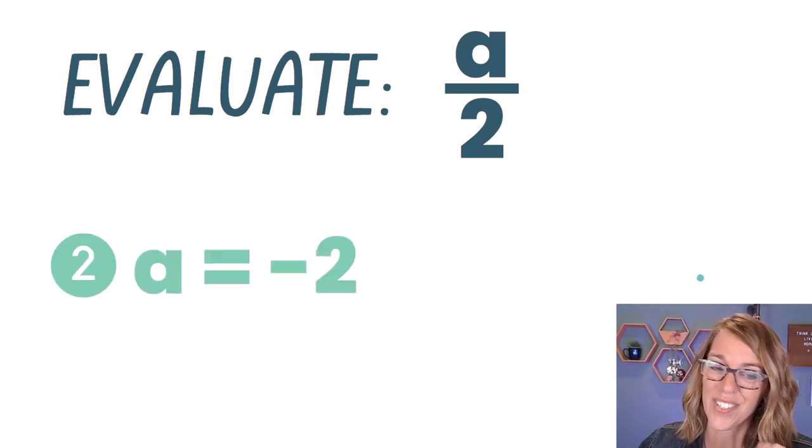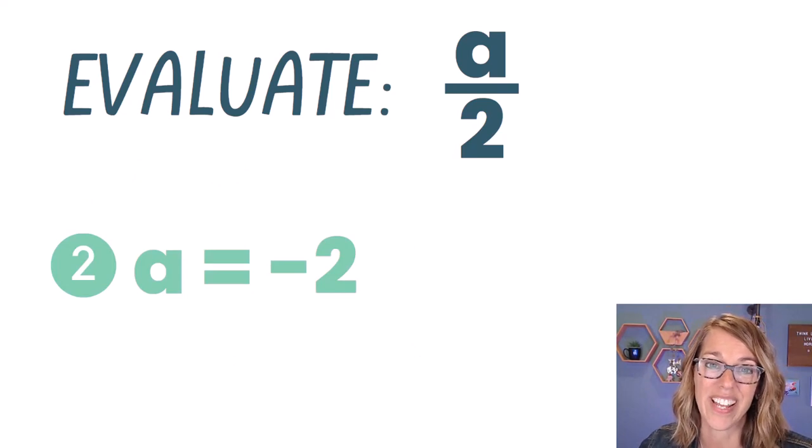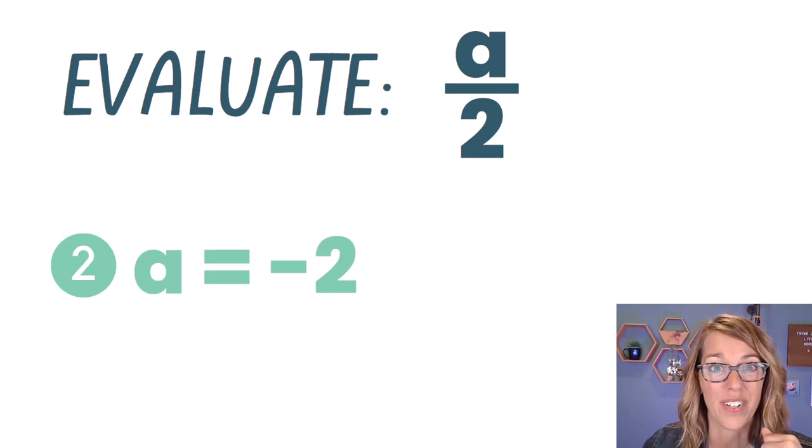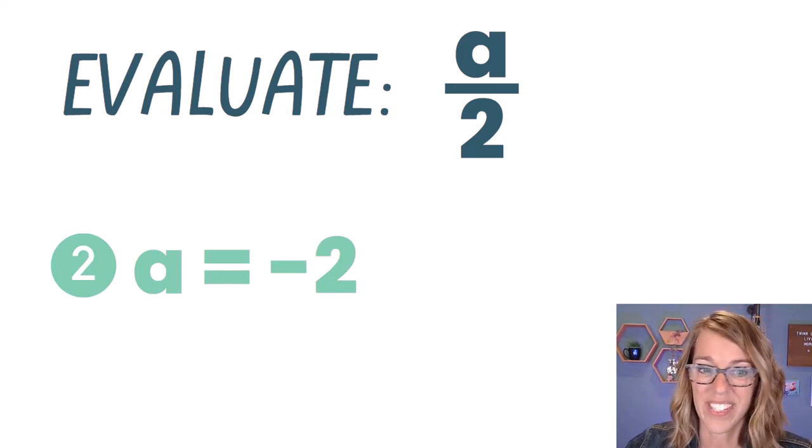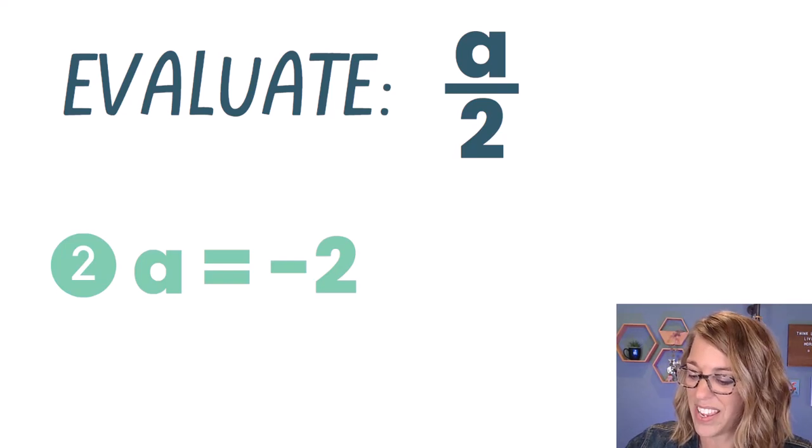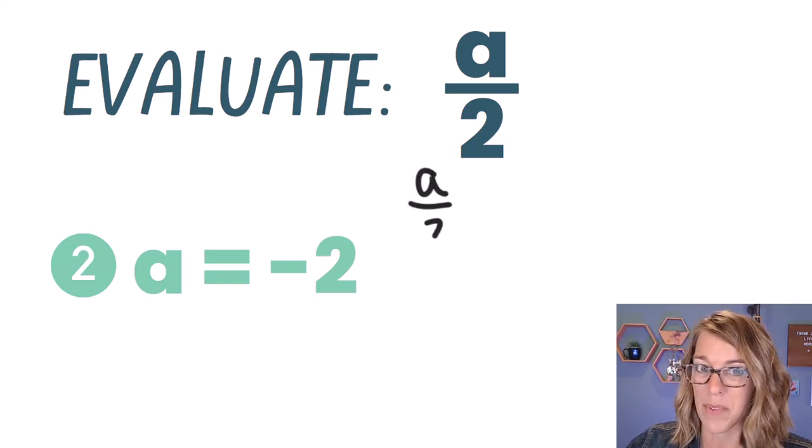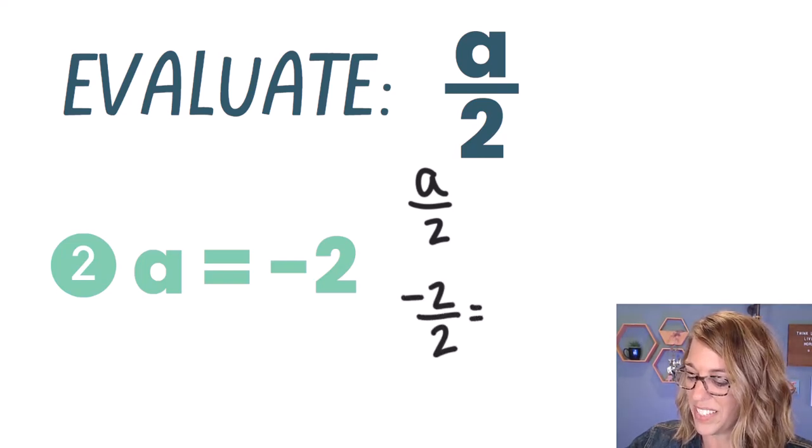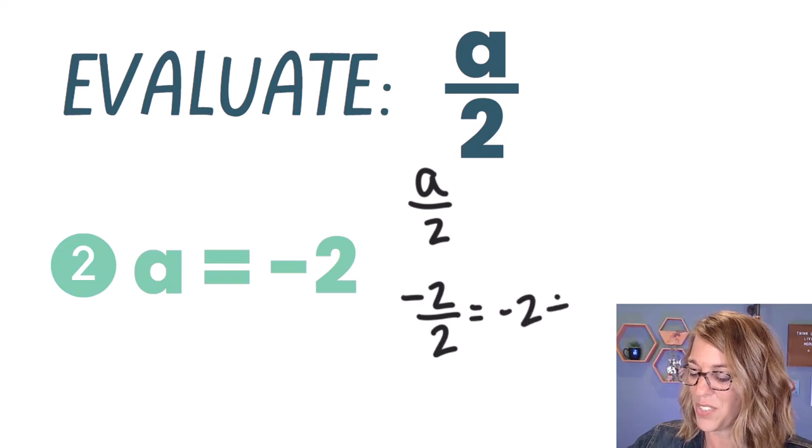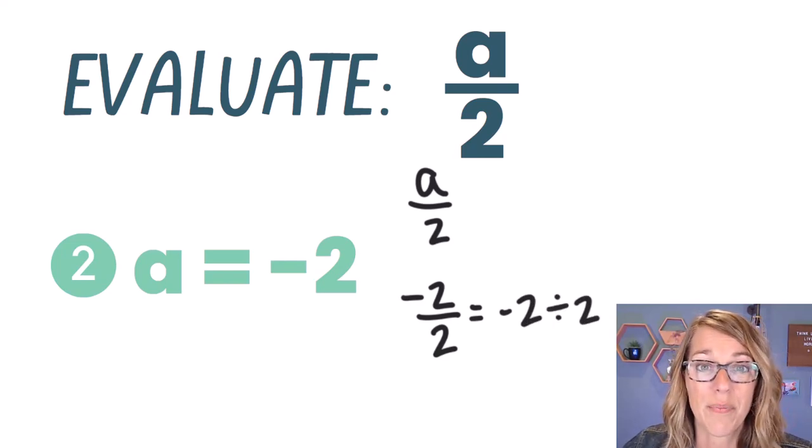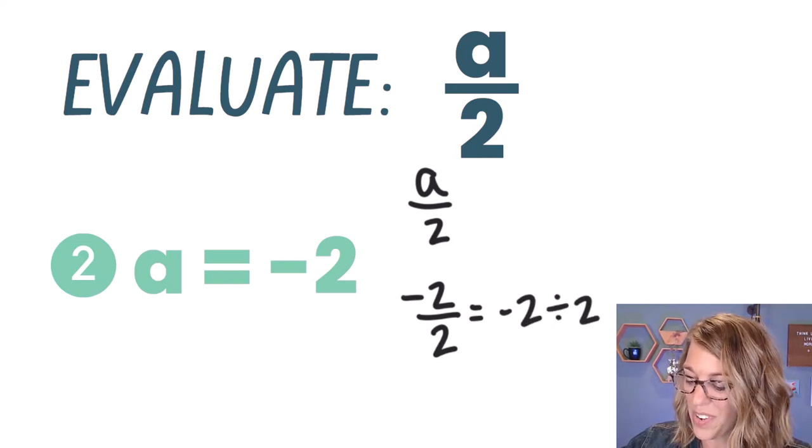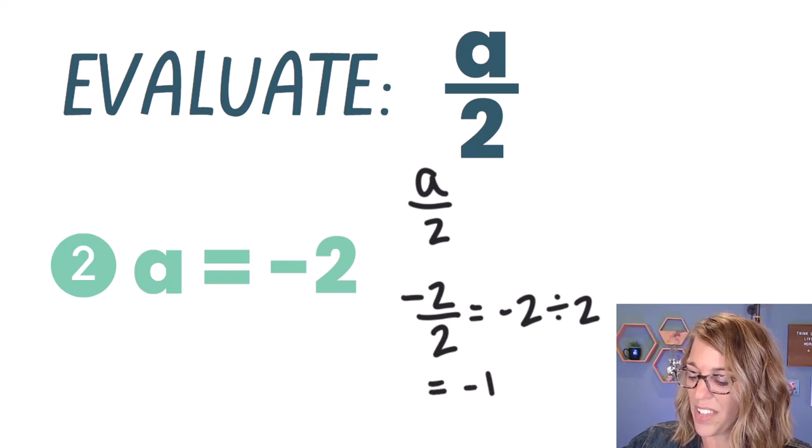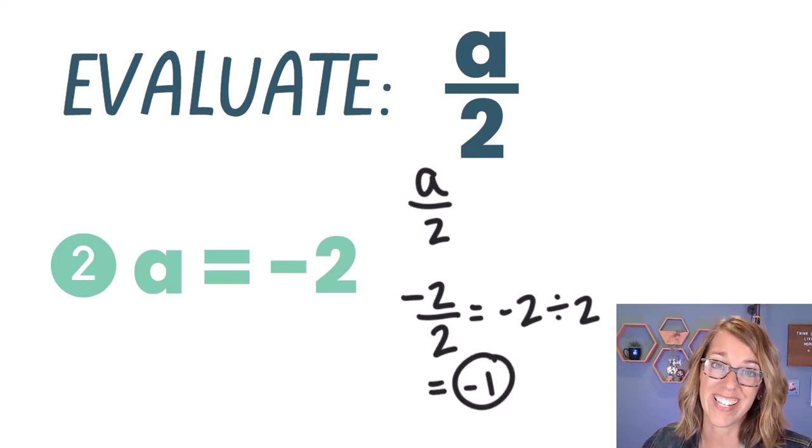See if you can do this next one when a is equal to negative two, or you can follow along with me. When a is equal to negative two, I've got a divided by two, but I'm going to replace that a with a negative two. So this is negative two divided by two, which I can think of as negative two divided by two. Negative two divided by two is equal to negative one. So the value of that expression is a negative one.